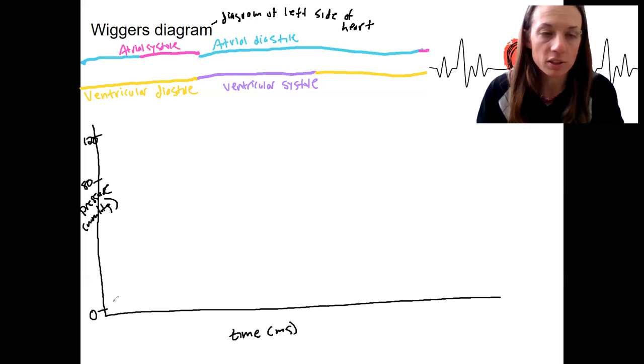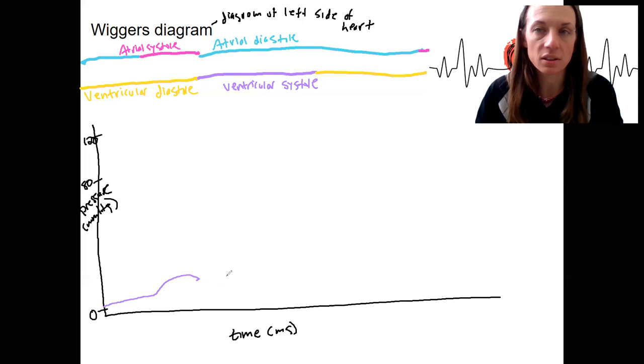Ventricular pressure is going to start pretty low, right here. And it's going to have a little blip here that corresponds to atrial systole. When the atria contract and kick that little bit of blood, that 20% into the ventricles, pressure is going to increase some.